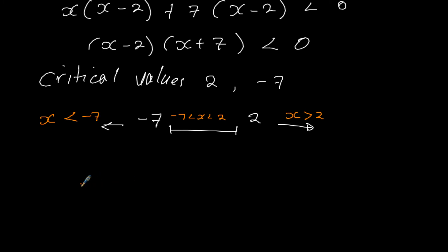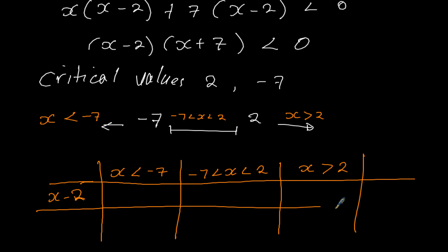Let me put these values here. We begin with this part which is x is less than negative 7, and then the values in-between negative 7 and 2, and the values after 2 which is x greater than 2. And here, we're putting the factorized form, that is x minus 2 and x plus 7.